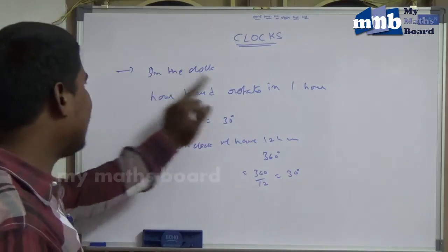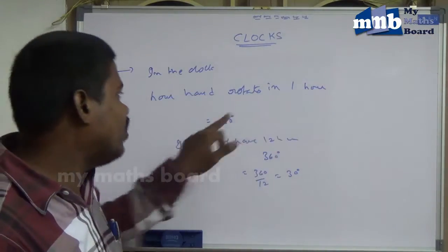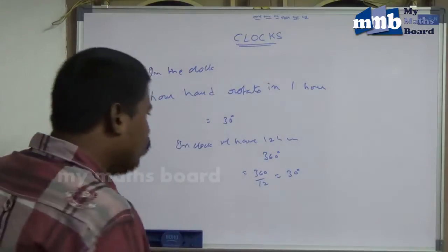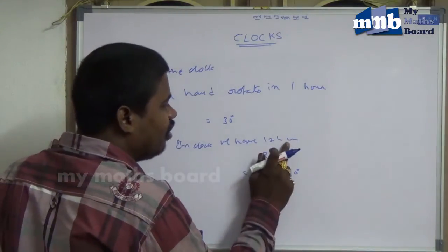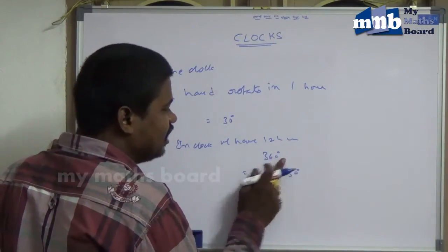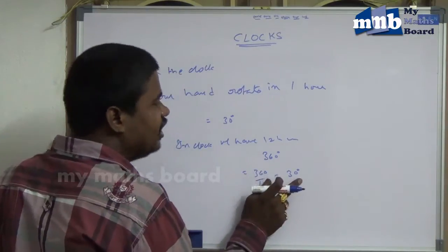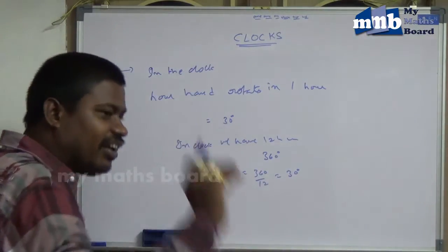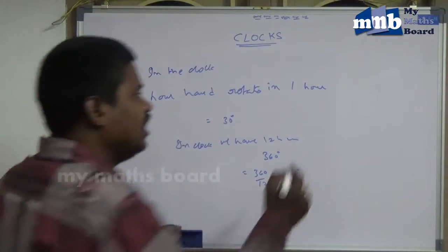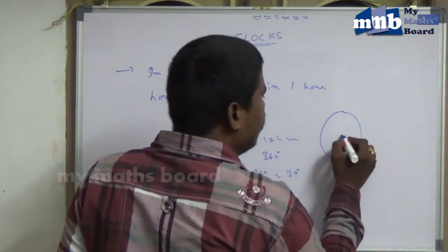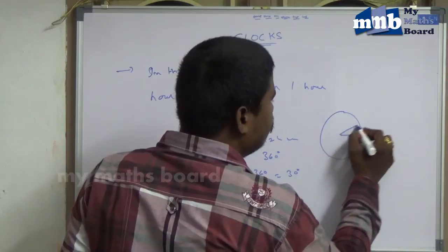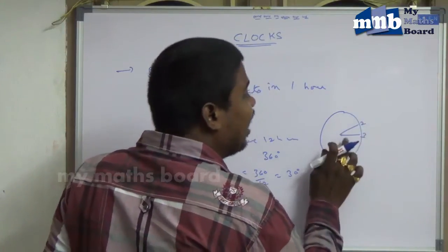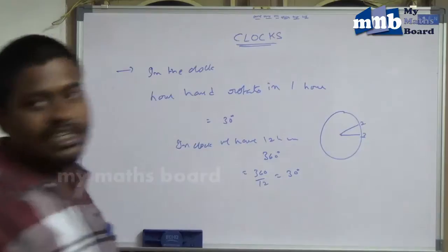So in the clock, the hour hand rotates 30 degrees in one hour. We have the clock with 12 hours and a total angle of 360 degrees, so 360 divided by 12 equals 30 degrees. That means in every one hour, the hour hand rotates 30 degrees. For example, from 2 o'clock to 3 o'clock, the hour hand rotates 30 degrees.